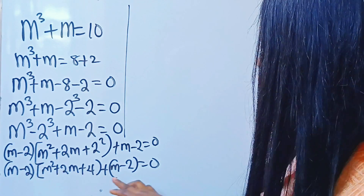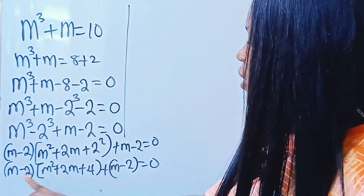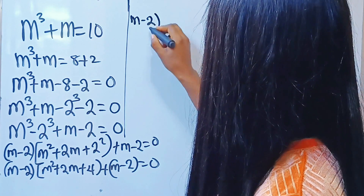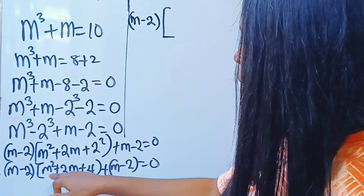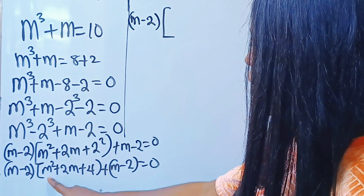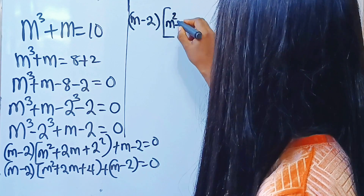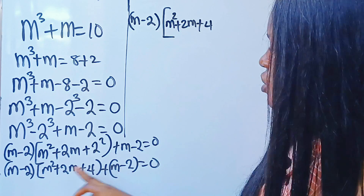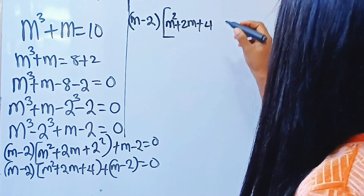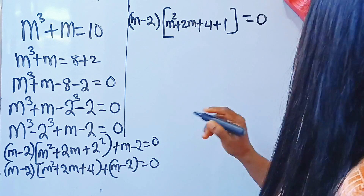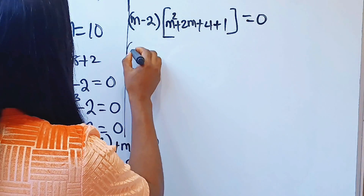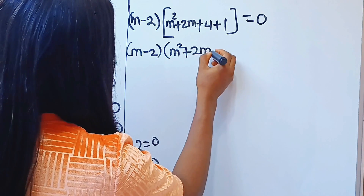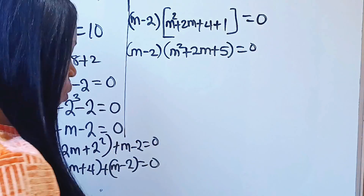Notice that we have m minus 2 here and we have m minus 2 here. So we are going to factorize it out. We bring out m minus 2, and open our bracket. When this is divided by m minus 2, we have m squared plus 2m plus 4 left. When m minus 2 is divided by m minus 2, we will have 1, so plus 1, equal to 0. Now we have m minus 2, bracket m squared plus 2m plus 5, equal to 0.